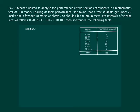Let us read the question. A teacher wanted to analyze the performance of two sections of students in a mathematics test of 100 marks. Looking at the performance, she found that a few students got under 20 marks and a few got 70 marks or above.